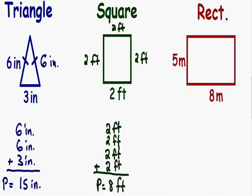Now moving on to our last example. We have a rectangle with a bottom side of 8 meters and a left side of 5 meters. In a rectangle, opposite sides have equal length, so the right side is also 5 meters and the top side is also 8 meters.